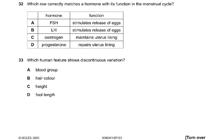Question 32: which row correctly matches a hormone with its function in the menstrual cycle? FSH is follicle stimulating hormone — it results in production of the egg inside the ovary. LH surges on day 14 and causes release of the egg, which is ovulation. Estrogen results in repair of the uterus lining, and progesterone maintains the uterus lining. The answer is B because LH stimulates release of the egg, not FSH.